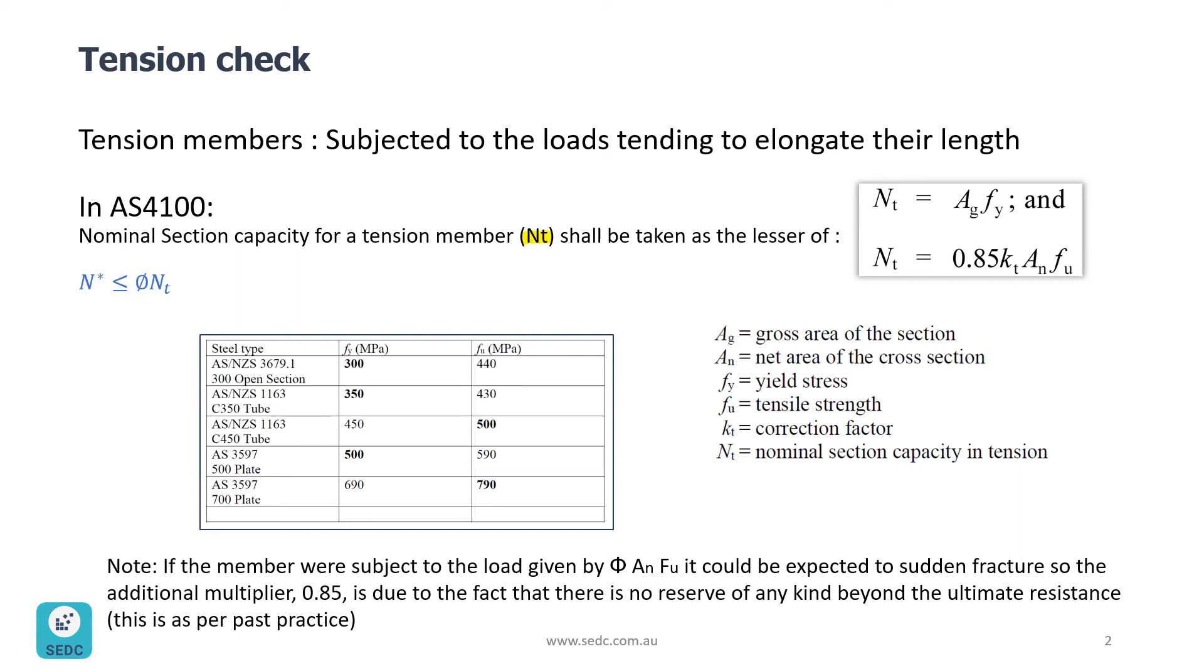There is a very important point to make here. If the member were subject to the load given by φ·An·FU, then it could be expected to sudden fracture. So this additional factor of 0.85 applied in this second formula is due to the fact that there is no reserve of any kind beyond ultimate resistance.